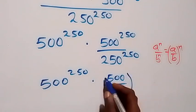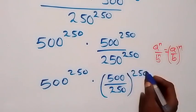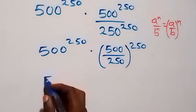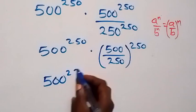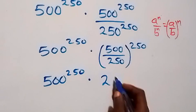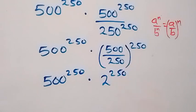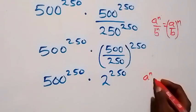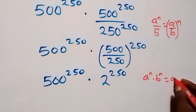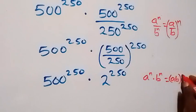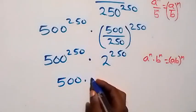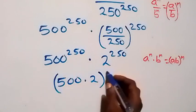Now, what we have in the bracket becomes 2, since 500 over 250 equals 2. So we have 500 raised to power 250, times 2 raised to power 250. Applying the law of indices — a raised to power n times b raised to power n equals ab raised to power n — we can write this as 500 times 2, all raised to power 250.